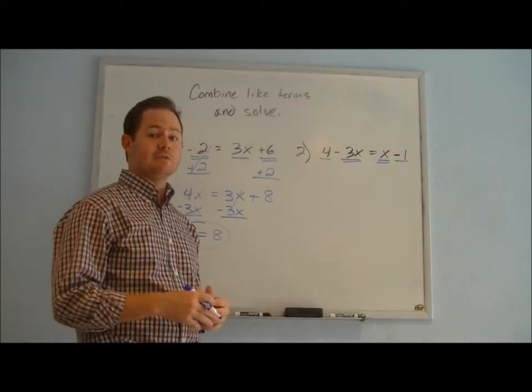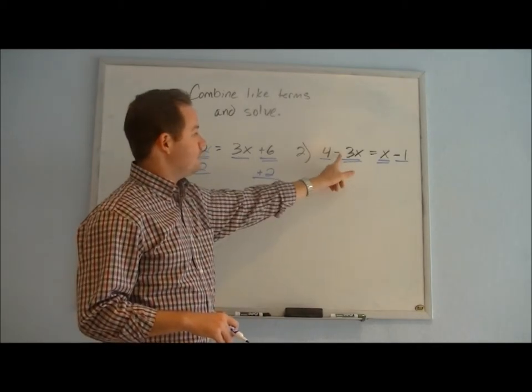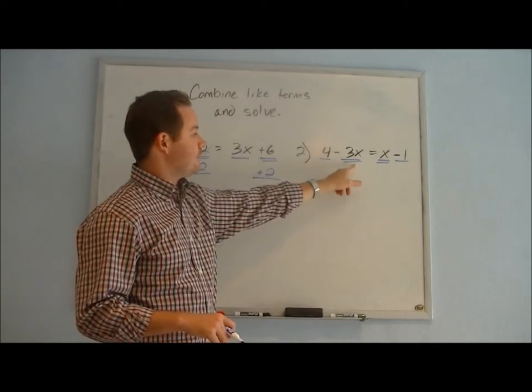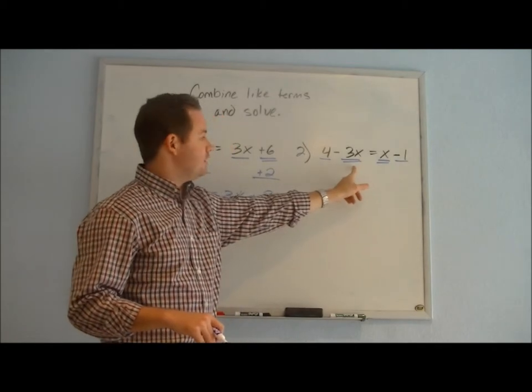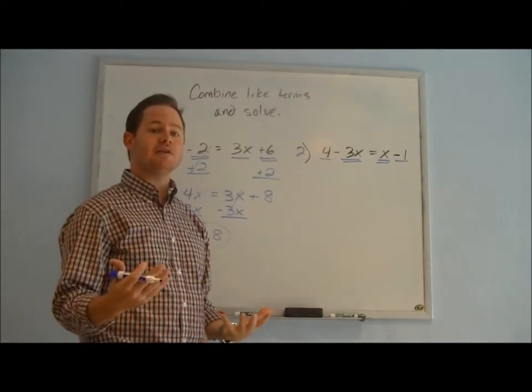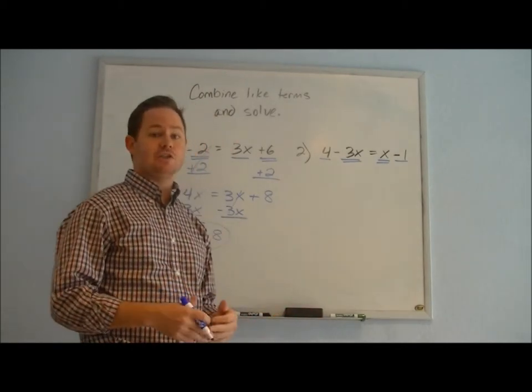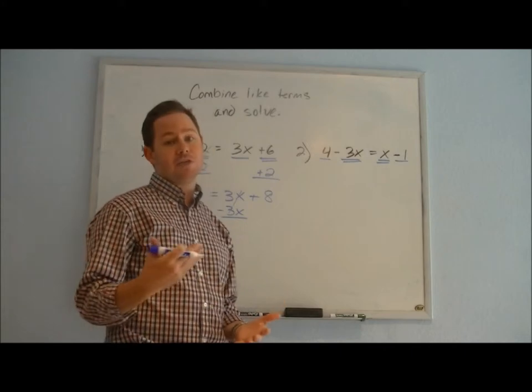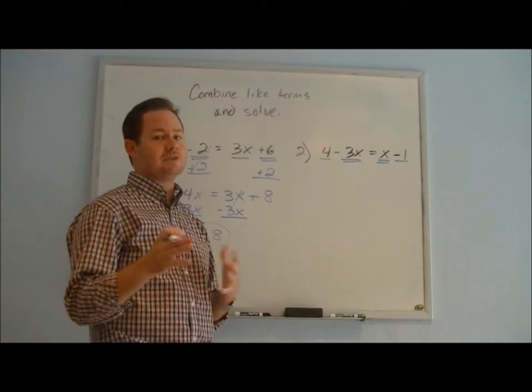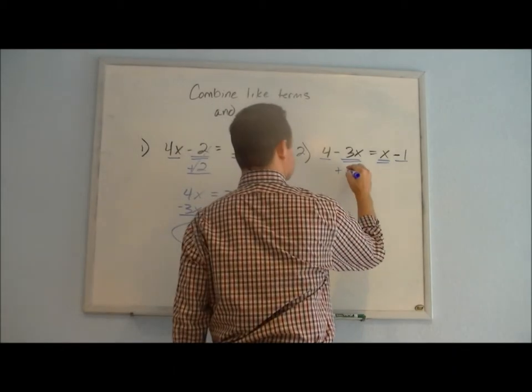Especially when we start getting into more complex positives and negatives, if you move the subtraction of a variable to the other side, then you're going to be adding it, which means you're more likely to end up with a positive value. It makes it a little bit easier when you're doing your calculations to avoid running into trouble or potentially making a mistake with the positive and negative. So here, let's add 3x to the other side to start with.